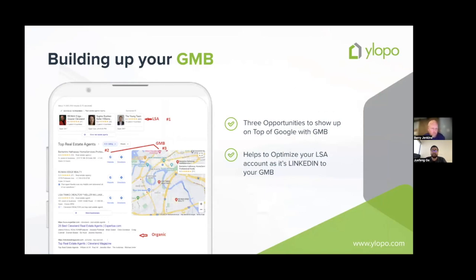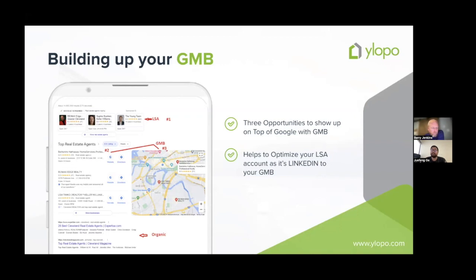In combination, LSA and GMB give you three separate opportunities to show up at the top of Google when someone types in 'realtor in Virginia Beach' or 'realtor in Los Angeles.' You can show up in the LSA section, in the top of the local search results, and as a pin within the map search. Optimizing LSA and GMB together is like having three separate pieces of Google working in your favor.